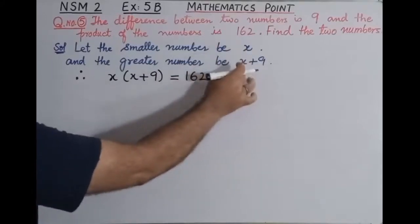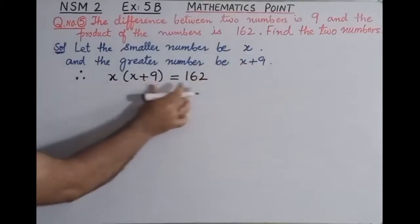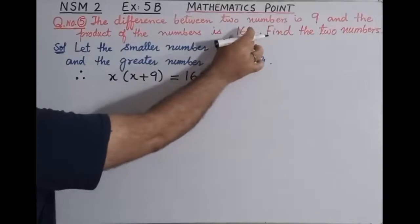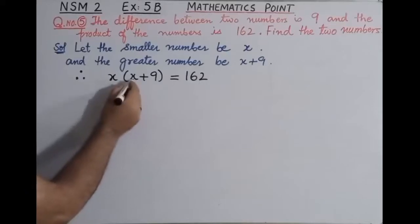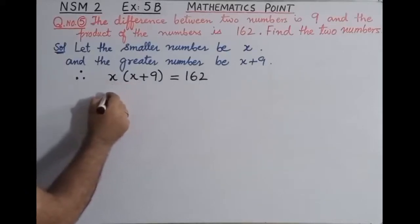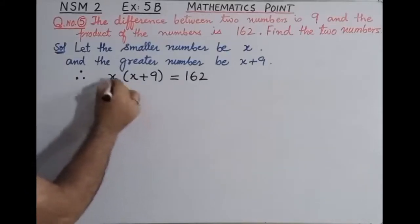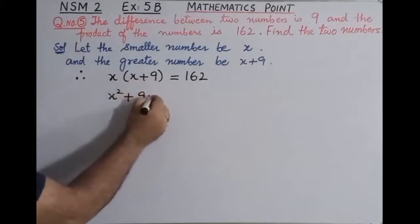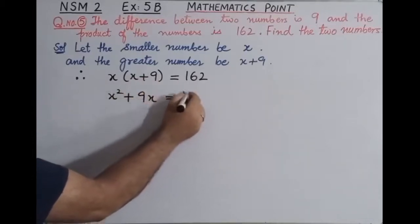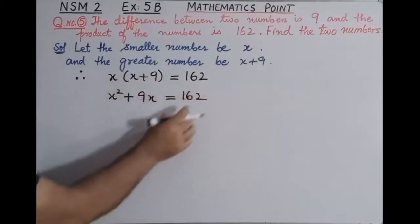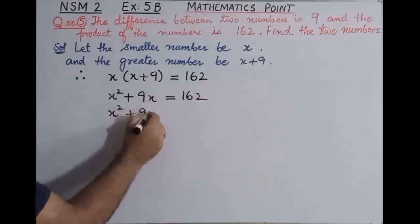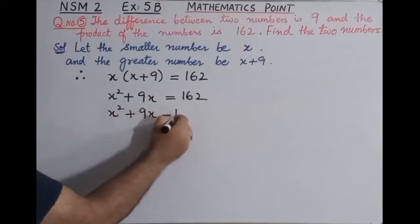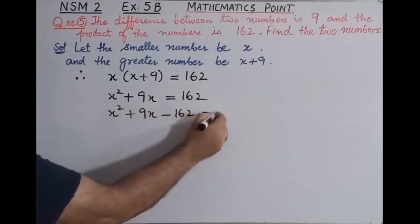क्योंकि इन दोनों का product जो है वो condition के मुताबिक given है 162। तो students आगे हम इसको further solve करते हैं। x को x से multiply करते हैं तो आएगा x square, plus x को 9 से multiply करेंगे आएगा 9x, equal to 162। फिर next step में 162 को इधर लाएंगे तो यह हो जाएगा x square plus 9x minus 162 equal to 0.